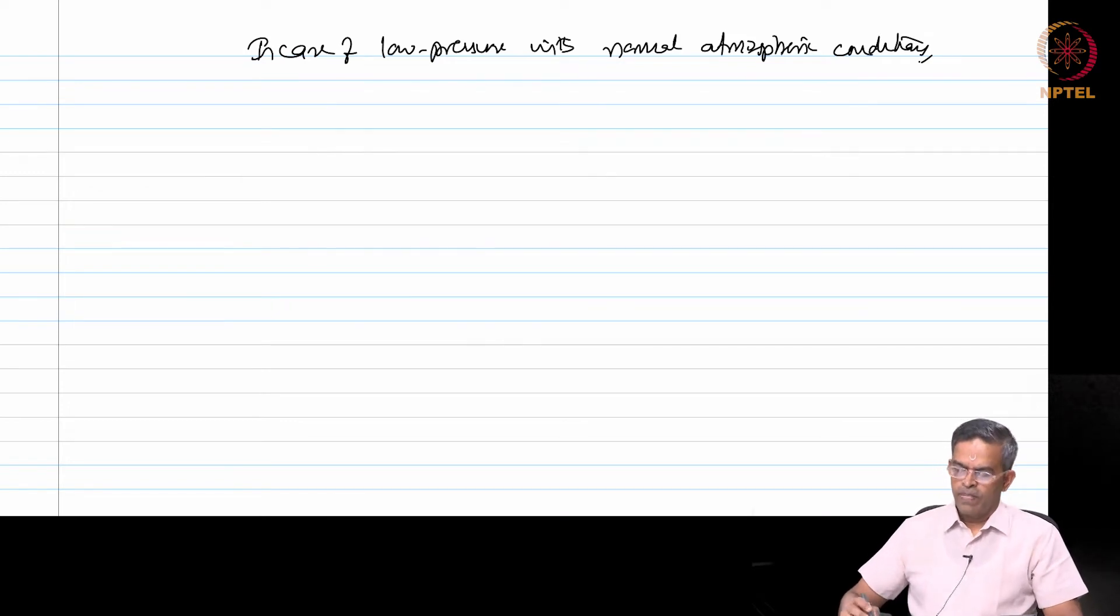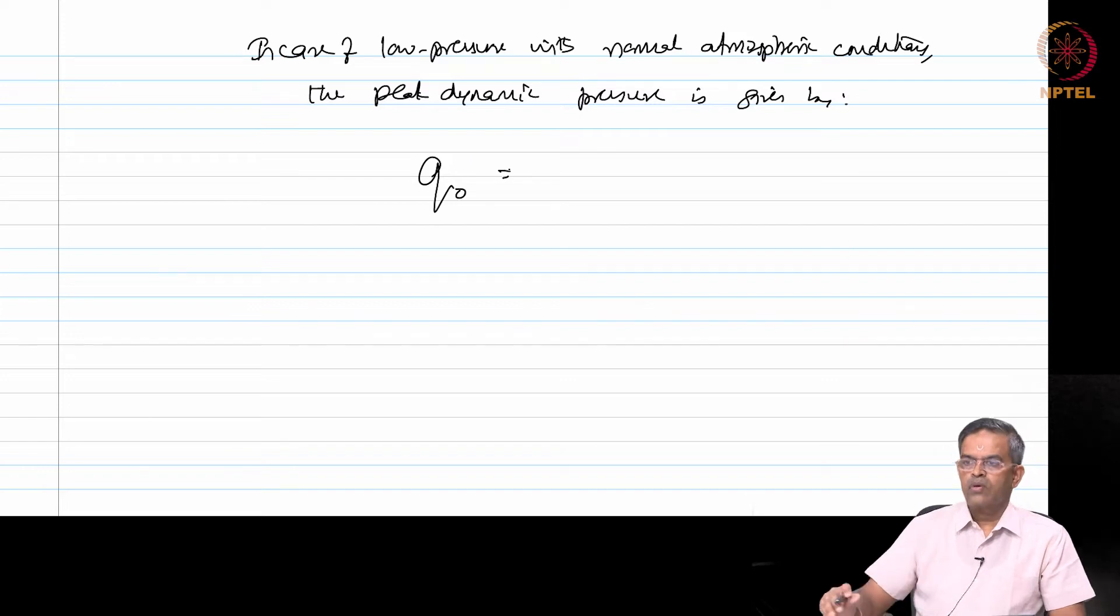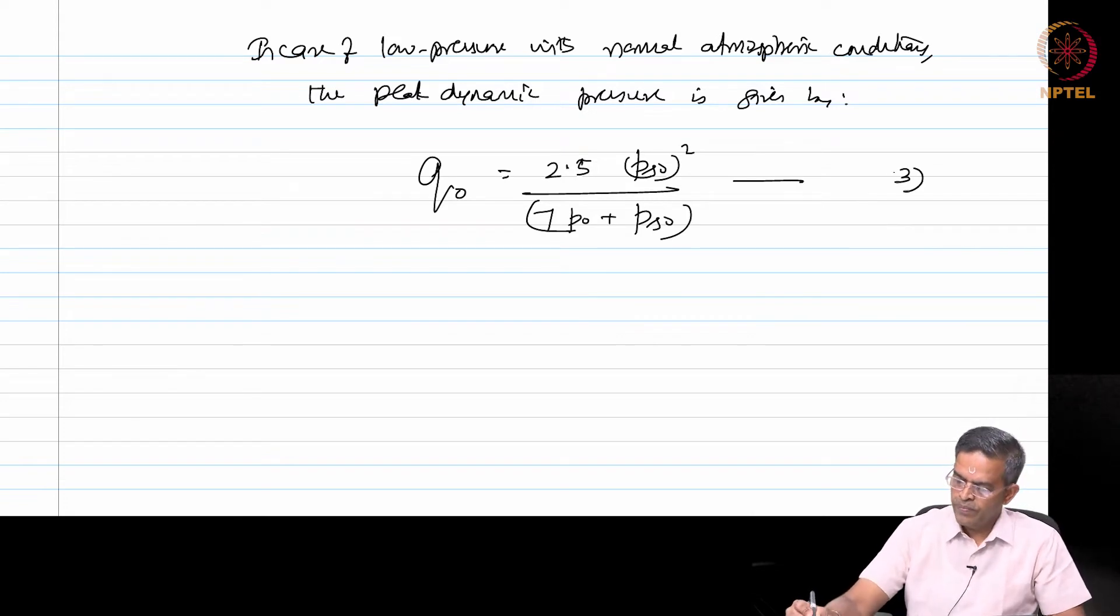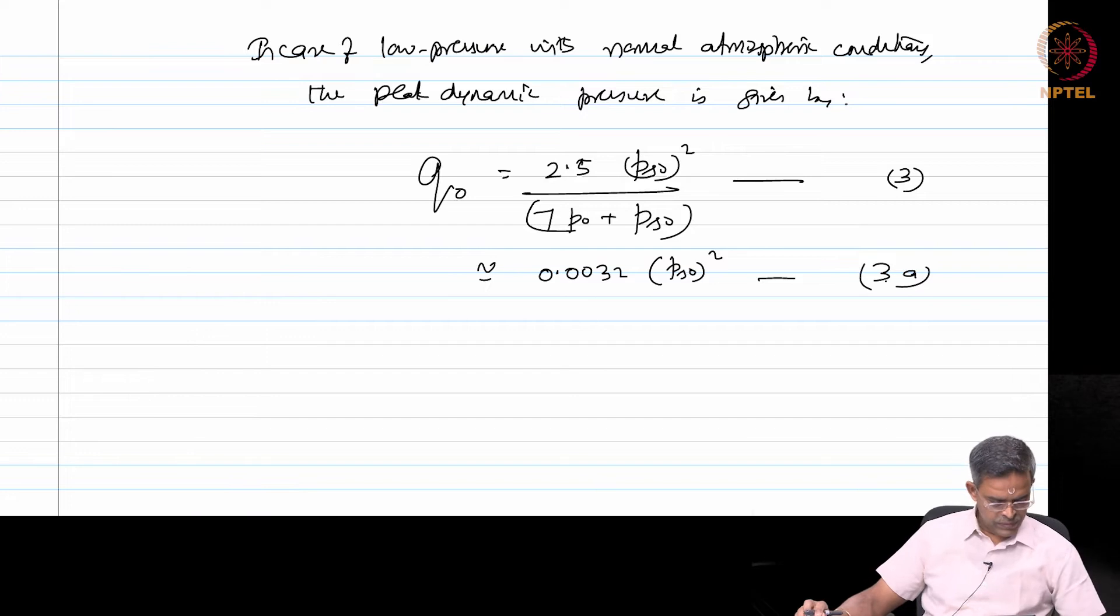The peak dynamic pressure can be calculated as below. Q naught is given by 2.5 PSO square by 7 P0 plus PSO, equation number 3, which is approximately equal to 0.0032 of PSO whole square, equals 3A.